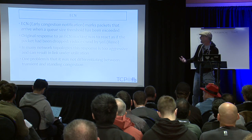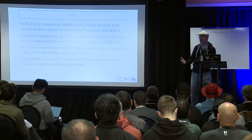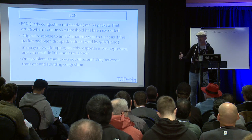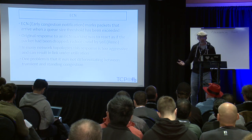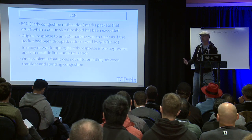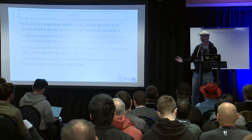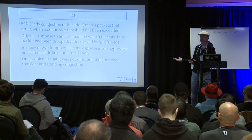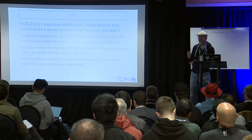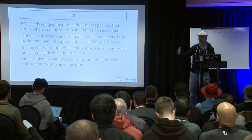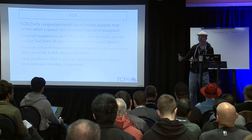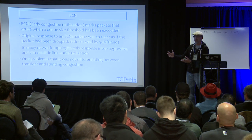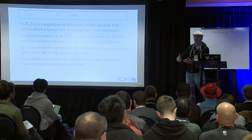The original response of TCP to ECN markings was just to react as if it was a packet drop. TCP Reno would decrease its congestion window by 50%. In many network topologies, this response is way too aggressive and can cause underutilization of links. One problem is that it doesn't differentiate between transient congestion — lasting less than an RTT — and standing congestion that lasts for many, many RTTs.